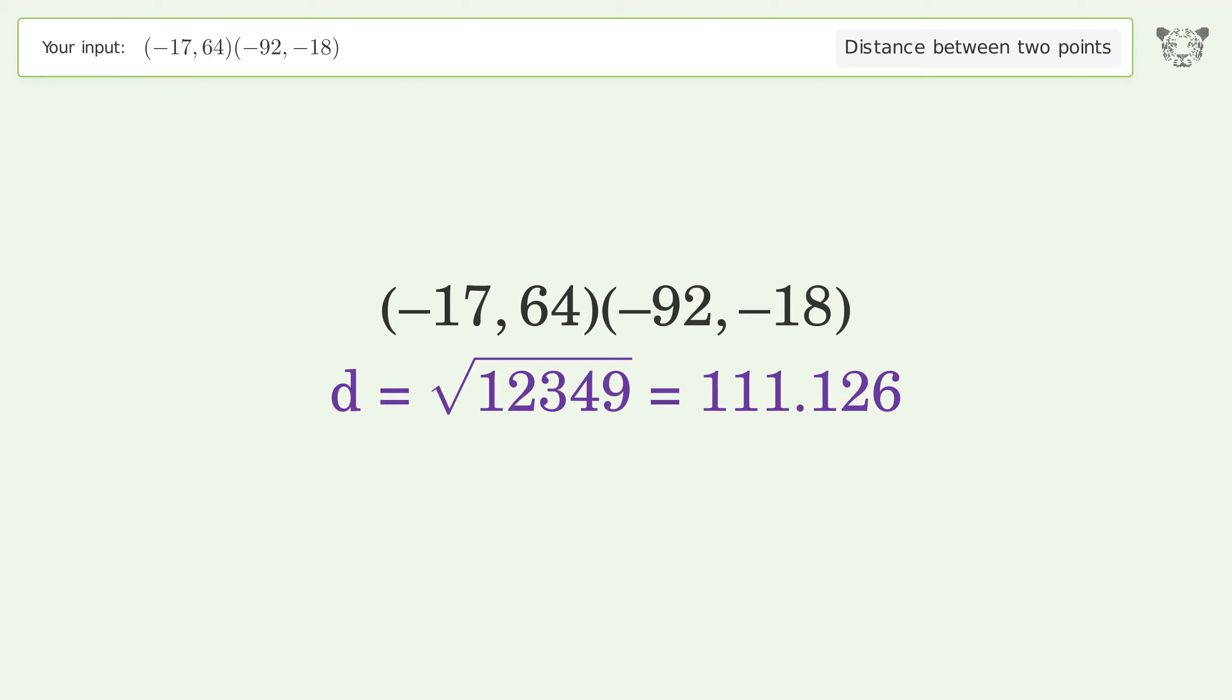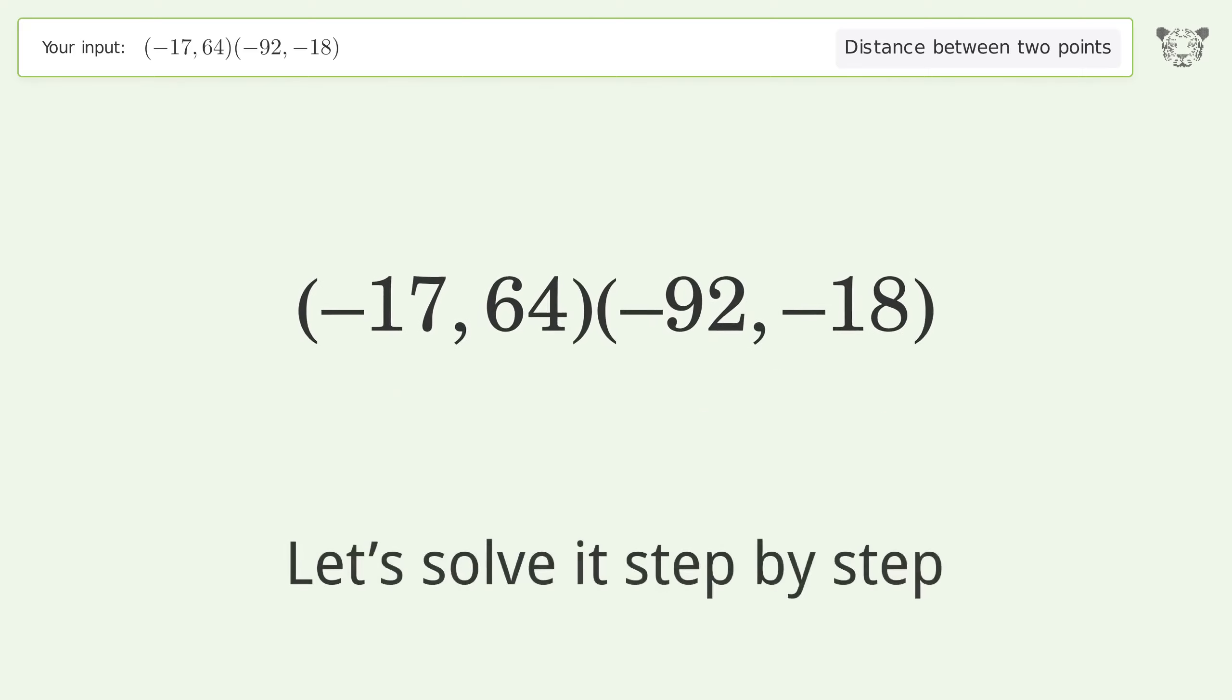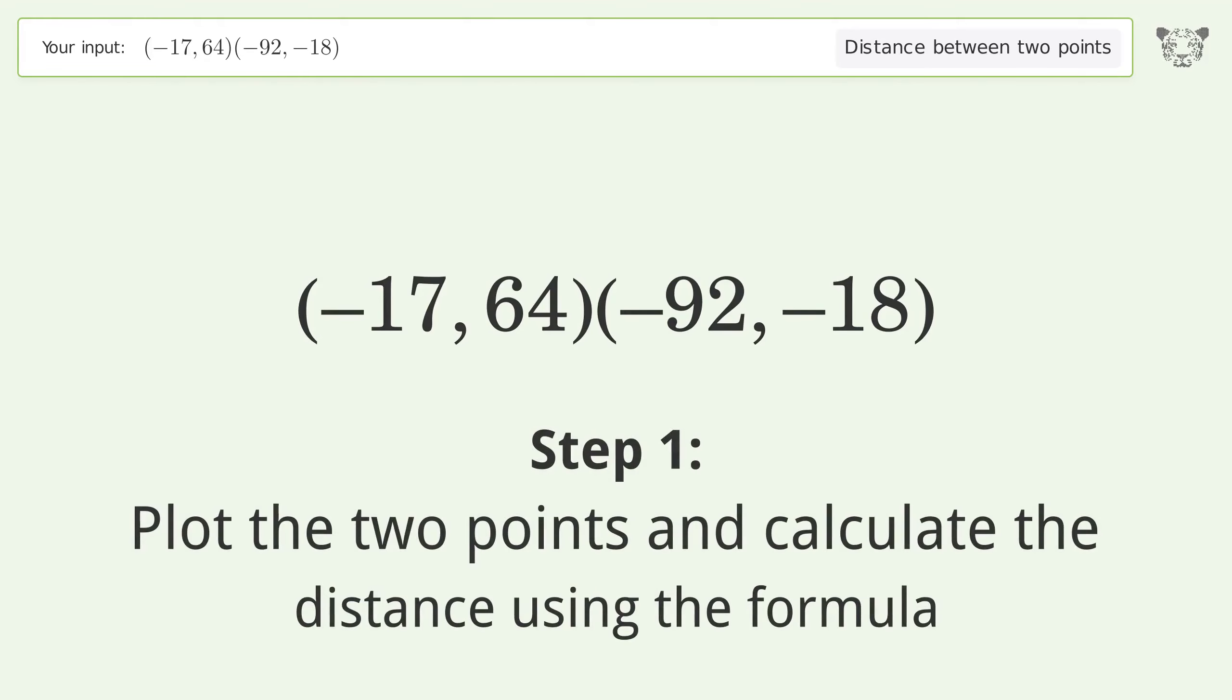The distance between the two points is the square root of 12349, or 111.126. Let's solve it step by step. Plot the two points and calculate the distance using the formula.